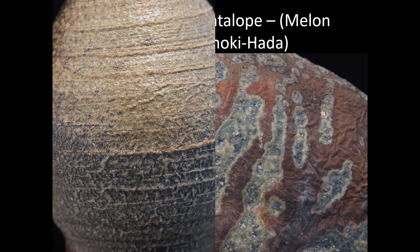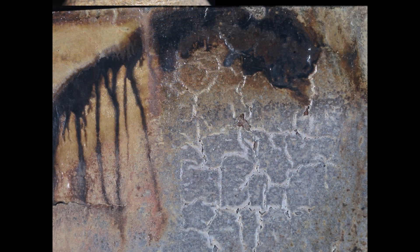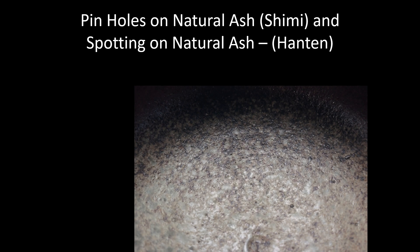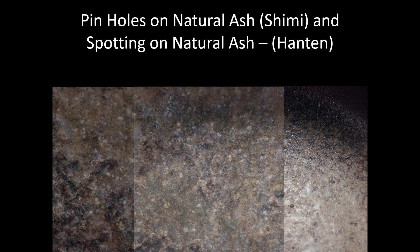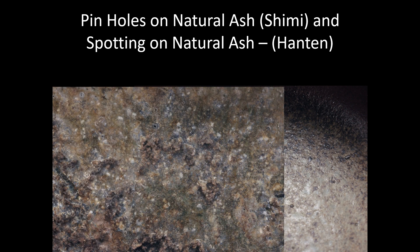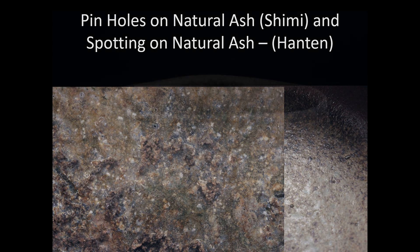Here again is another picture of enoki hada and some melon hada. Pinholes on natural ash are called shimi, and spotting on natural ash is han ten. Han ten is any kind of spots, and they occur for a number of different reasons. In this case, what you're seeing on the left is embedded feldspathic rock — like decomposed granite — that's melting and turning white and creating spots.